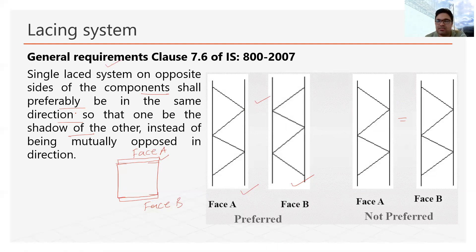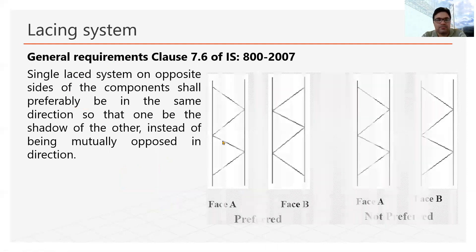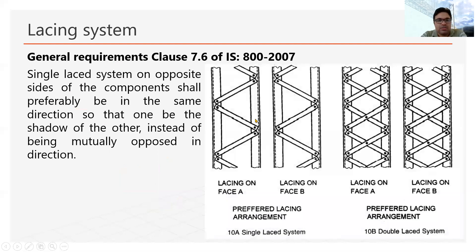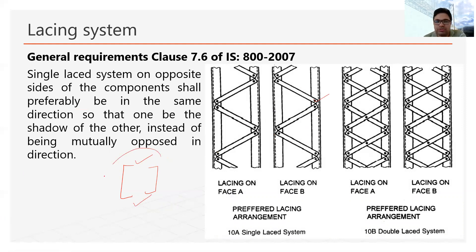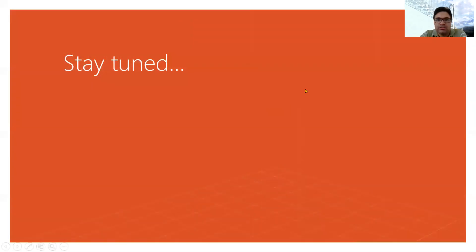Another requirement shown here is that on one face we should not provide single lacing while on the other face we provide double lacing — mixing lacing types on opposite faces is not recommended by IS code. We will continue the discussion in the next part. Thank you.